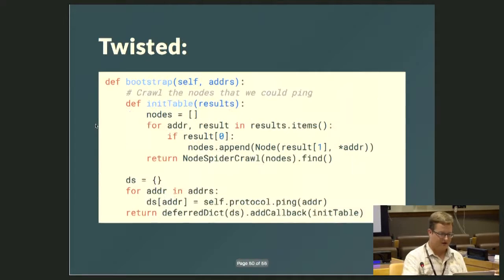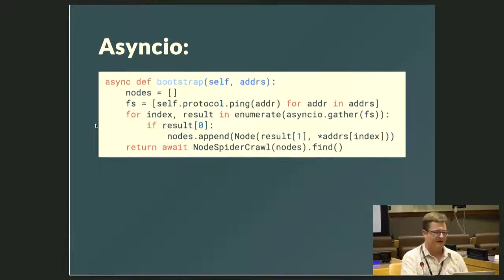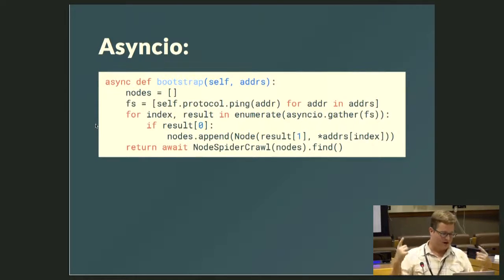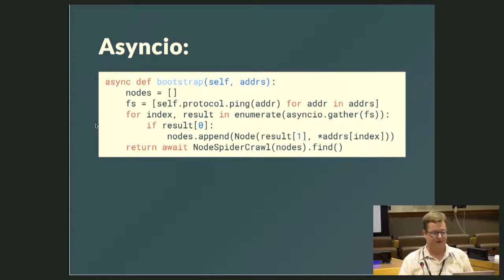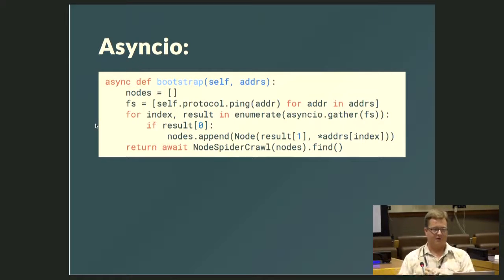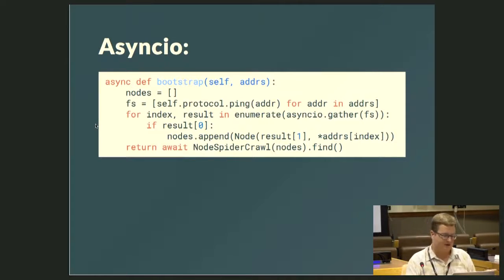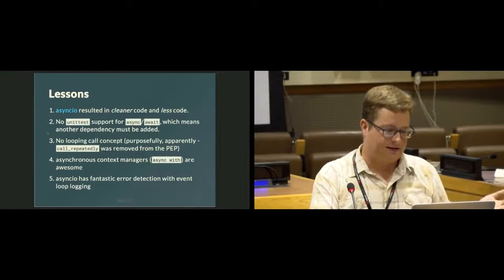This is the asyncIO conversion, and you'll notice it's less code, it's prettier, there's no internal def. I can just say the whole thing is async, I can ping all the addresses I know about, get back some results, and then crawl all of those afterwards. I'm using asyncio.gather in this case, which basically says: take all of these things that are going to take a while, and tell me when they're all done and give me all their results. It looks prettier, less code, and that was what most of the conversion ended up looking like.